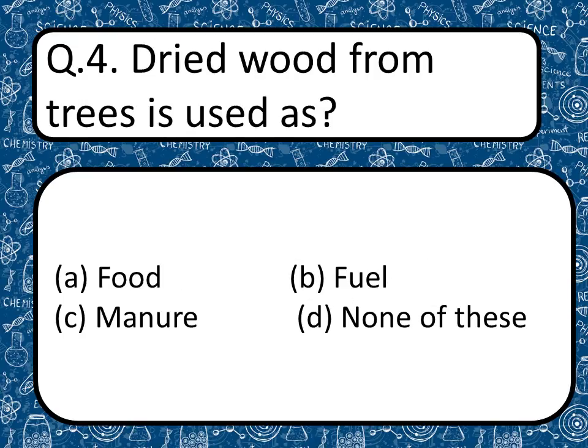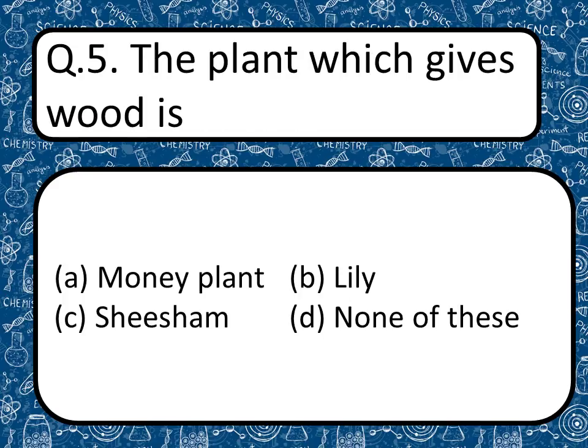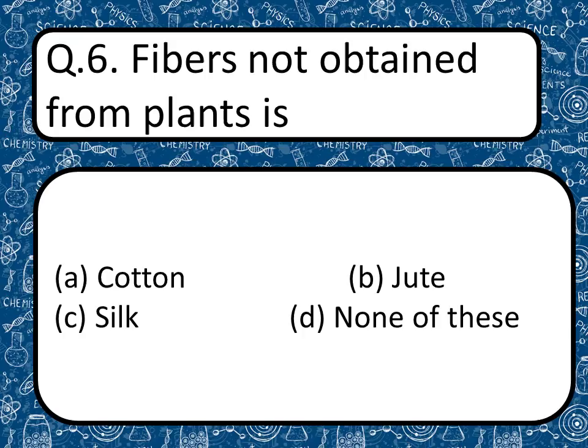Next question: Dried wood from a tree is used as food, fuel, manure, or none of these? The correct answer is fuel. Fifth question: The plant which gives wood is — guess your answer — money plant, lily, shisham, or none of these? The correct answer is shisham.